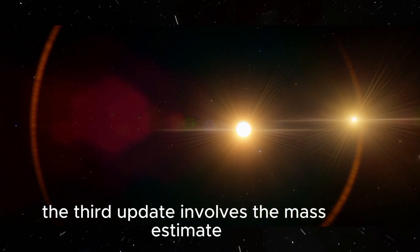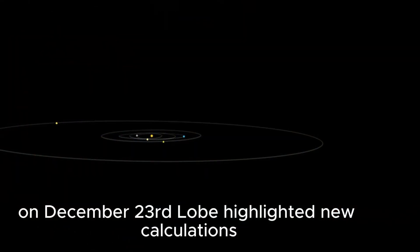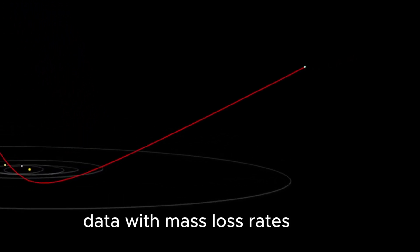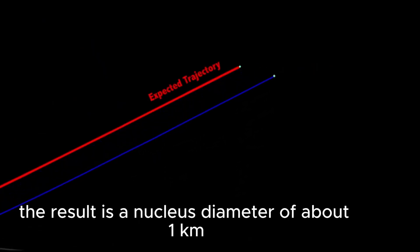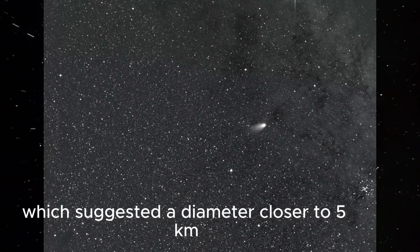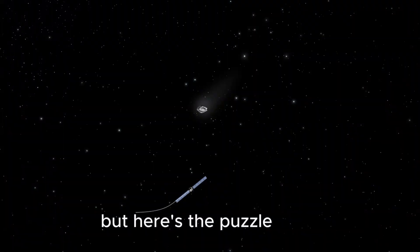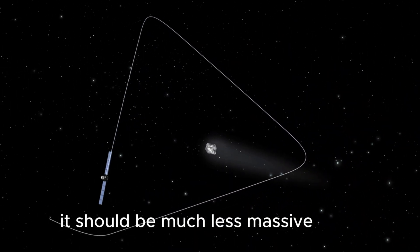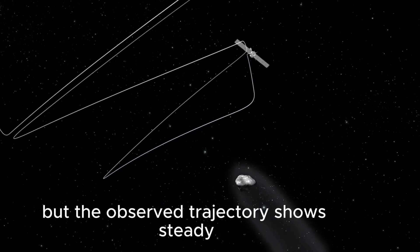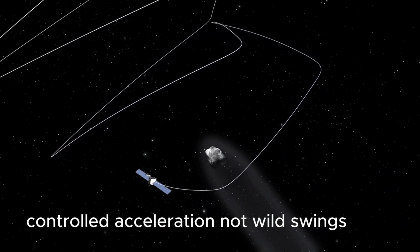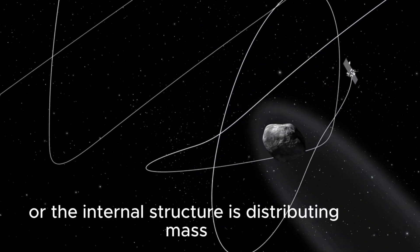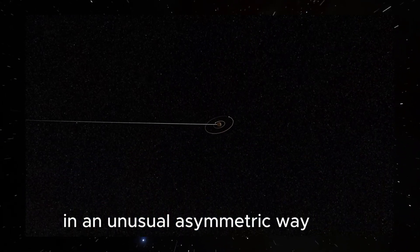The third update involves the mass estimate. On December 23rd, Loeb highlighted new calculations that combine non-gravitational acceleration data with mass loss rates. The result is a nucleus diameter of about 1 kilometer. That's significantly smaller than earlier estimates which suggested a diameter closer to 5 kilometers. But here's the puzzle. If the nucleus is only 1 kilometer across, it should be much less massive. And less mass means the jets should push it around more dramatically. But the observed trajectory shows steady, controlled acceleration, not wild swings. That discrepancy suggests either the density is higher than expected or the internal structure is distributing mass in an unusual, asymmetric way.